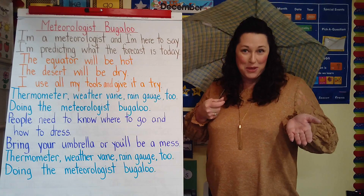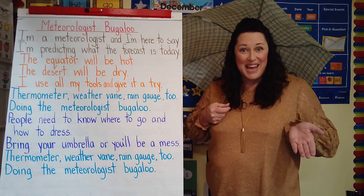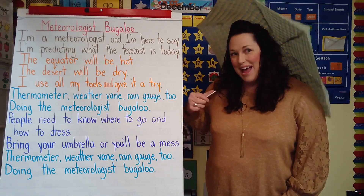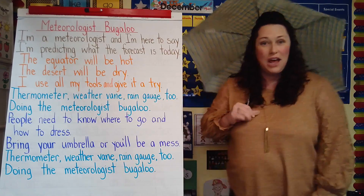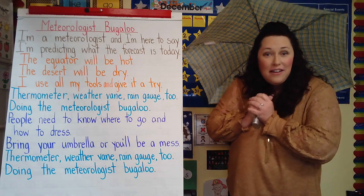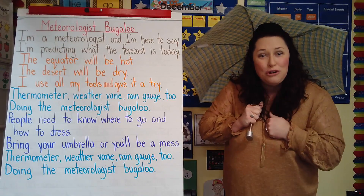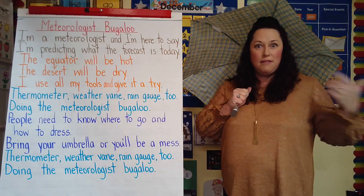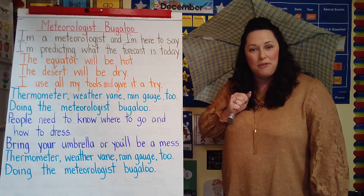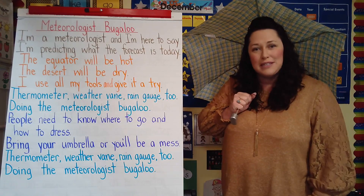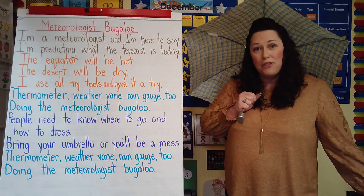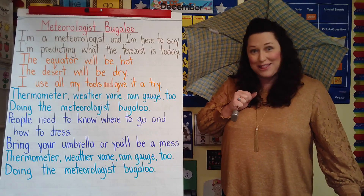Friends, this unit in science is going to be all about weather and climate. I'm so excited because we might need our umbrellas, we might need our gloves, our hats, our snowshoes, or maybe even our bathing suits. We're going to learn all about the different types of weather and all the tools that meteorologists use to talk about the weather and determine how we get the weather.